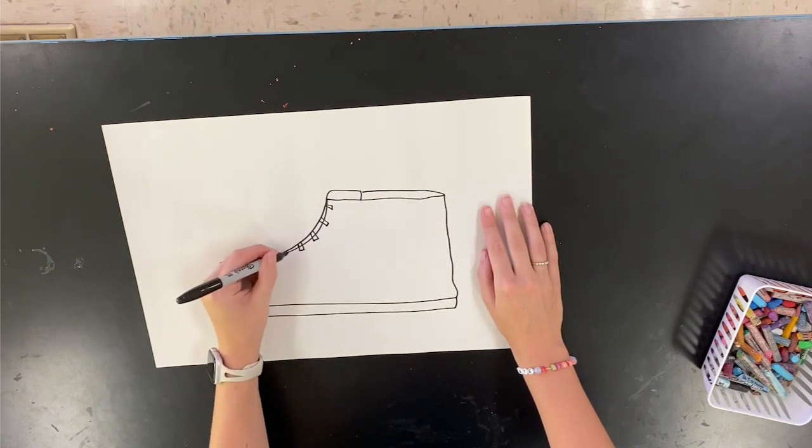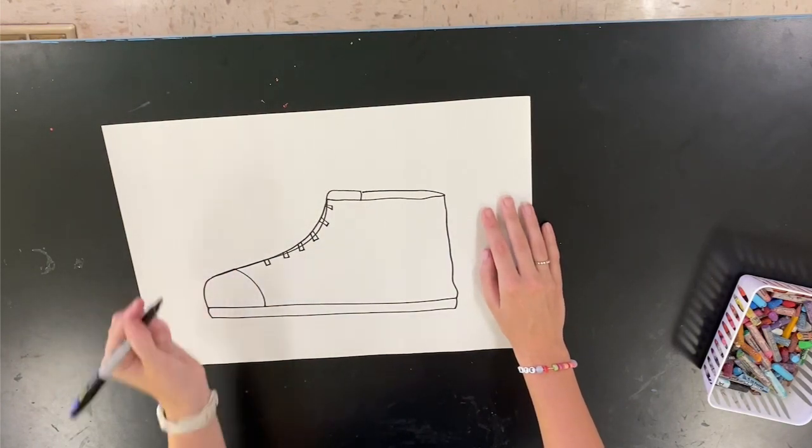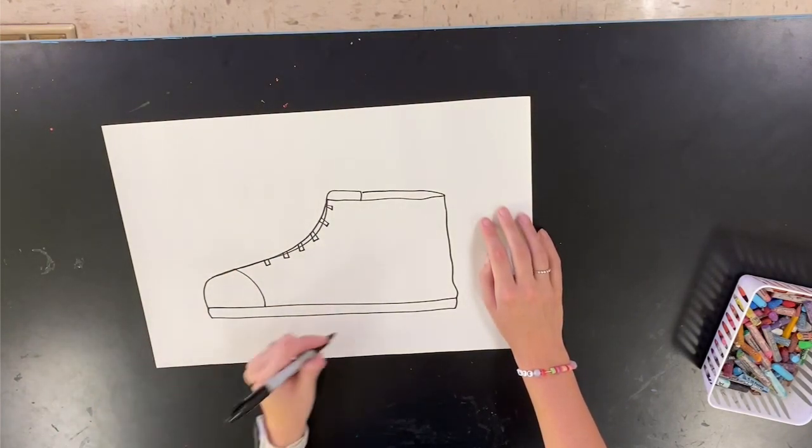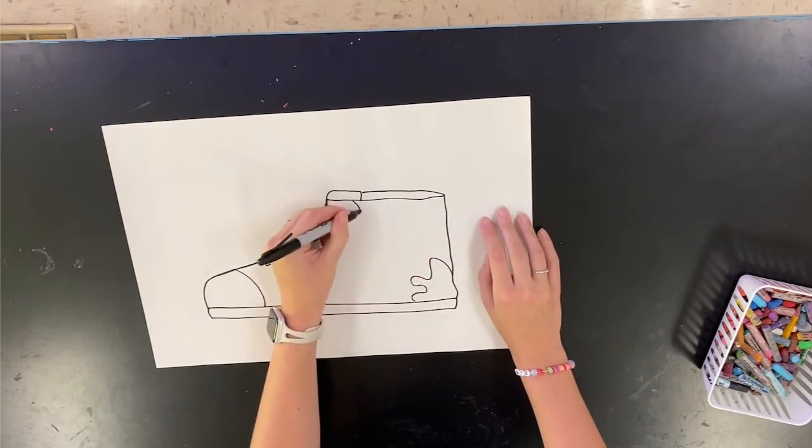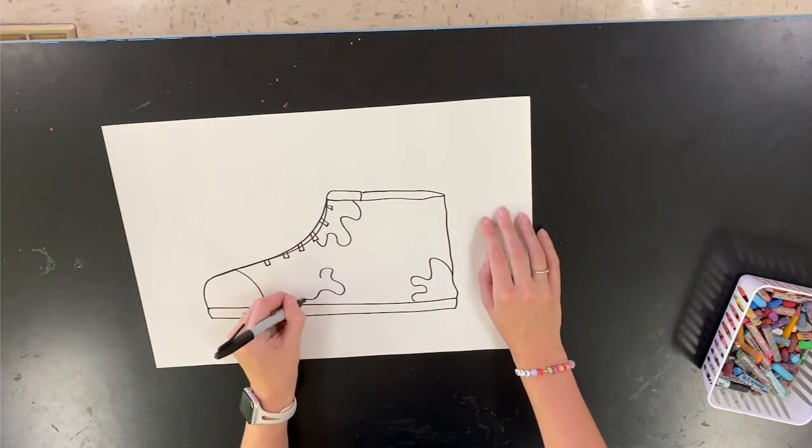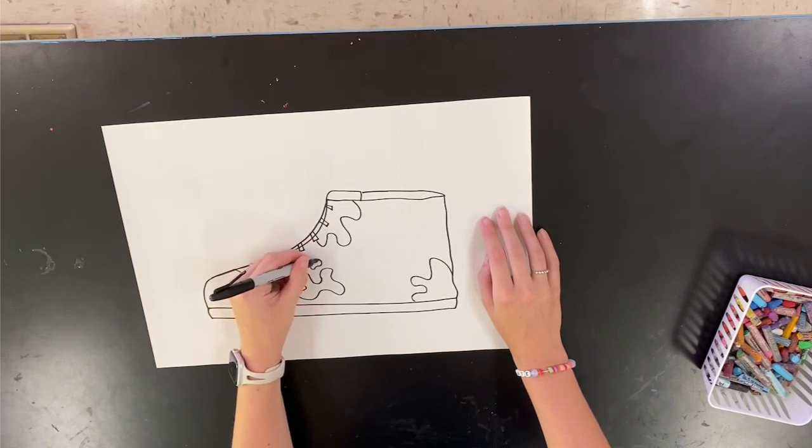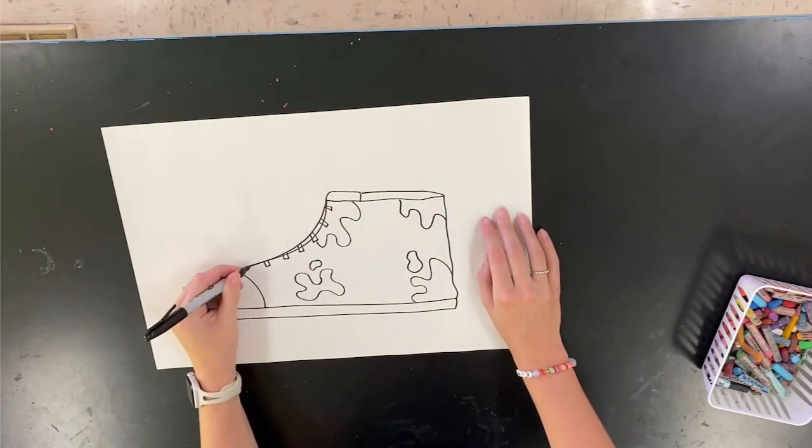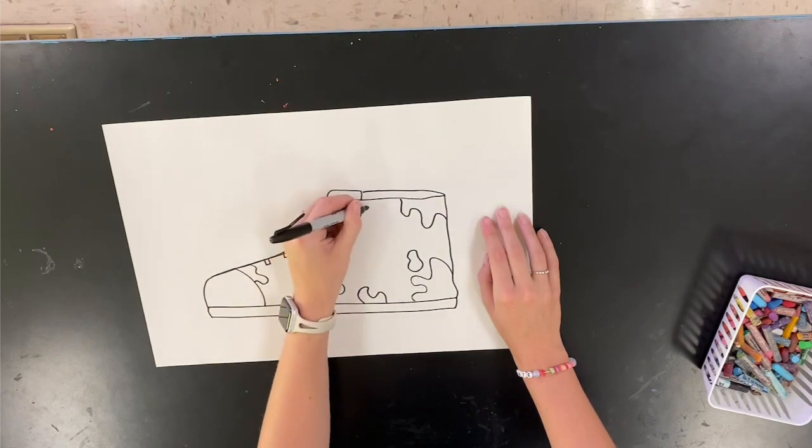Now I added that toe at the top and the laces because I want my shoe to look more like a converse. Of course you can make your shoe look more like whatever shoe you would like. And then you need to decide on what theme you're going to design your shoe with.